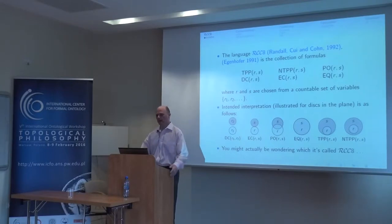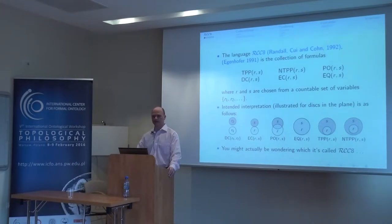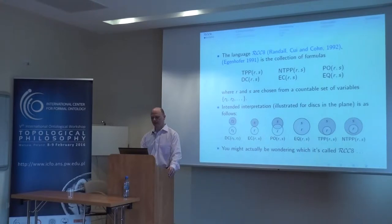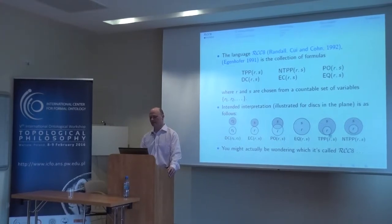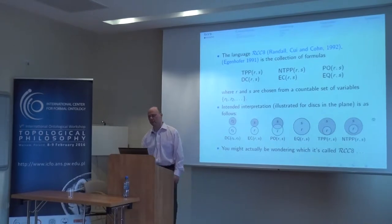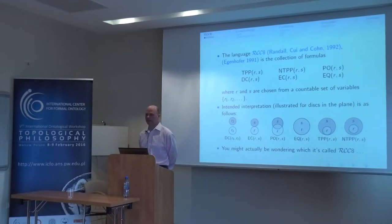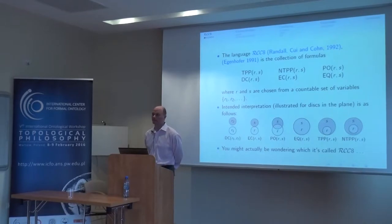The arguments of these predicates are just variables — logical variables — but you are to think of these variables as standing for regions of space. The semantics is illustrated for disks in the plane. So these two regions, R1 and R2, are disconnected. These are externally connected — they touch at the boundary but don't overlap. These partially overlap. These are equal. R is here a tangential proper part of S, and R is here a non-tangential proper part of S.